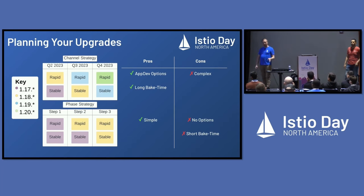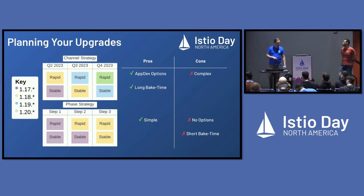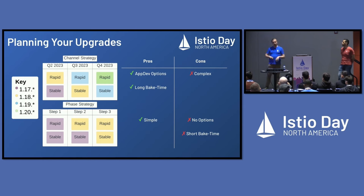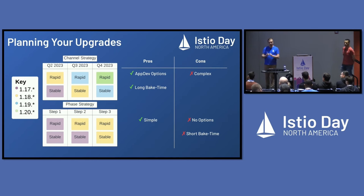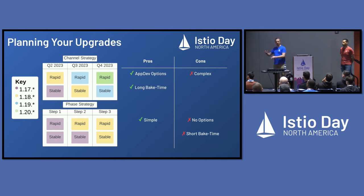We think there are two good ways to plan your upgrade in ambient mode: channels and phases. In the channels mode, you always have two minor versions of Istio running in your cluster. When 1.20 rolls out, it goes to rapid and 1.19 is stable. Then, after three months, when 1.21 comes out, rapid goes to 1.21 and stable goes to 1.20. The advantage is your app dev can actually choose between rapid and stable. If they want the latest and greatest, they ride on rapid. If they want something that just works, they stay on stable — and by the time 1.20 gets into stable, it's had a three-month bake time. On the flip side, it's pretty complicated — a lot of control planes spinning up.